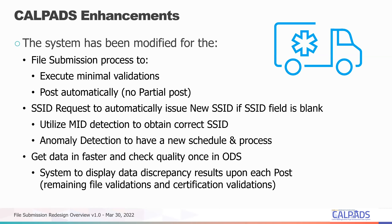The enhancement was to get data in faster, because that's where the bottleneck and slowness came from. We will get the data in faster and then check for quality in the ODS after it gets posted. We are adding a new feature called data discrepancies — after you post a file, data discrepancies will run and those additional validations that we didn't do on input will be performed after the fact.